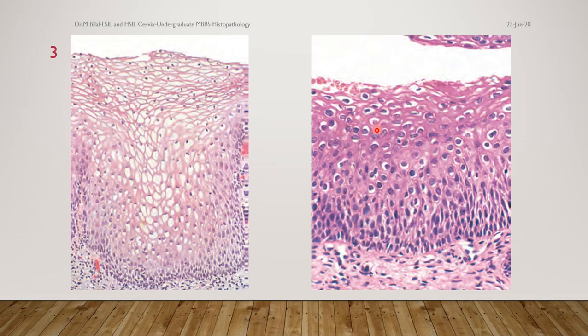Some cells may also show binucleation. When binucleation occurs with surrounding clearing, we call that koilocytic change or koilocytic atypia, which is a very important part of the diagnosis of squamous intraepithelial lesions of the ectocervix. These changes, mostly seen in the superficial one-third, are termed LSIL — low-grade squamous intraepithelial lesion — or CIN-1.